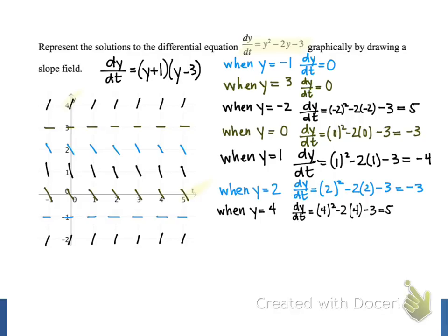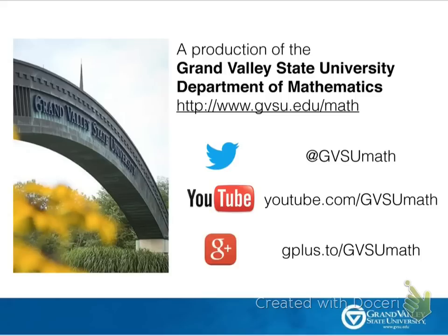So we've completed drawing our slope field. This gives us a qualitative view of the solutions to our differential equation and how they're changing for different values of y and t. In the following screencast, we'll look at how to find specific unique solutions to differential equations, instead of the infinitely many possible solutions that exist. Thanks for watching!